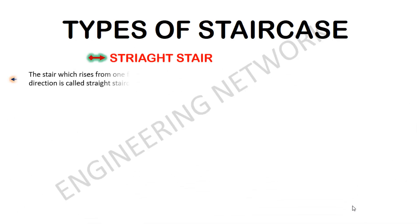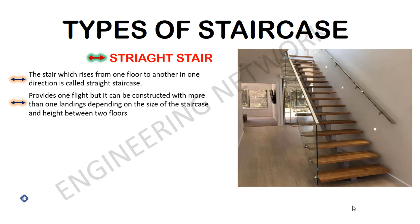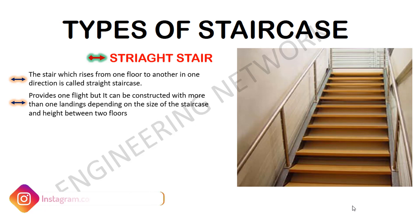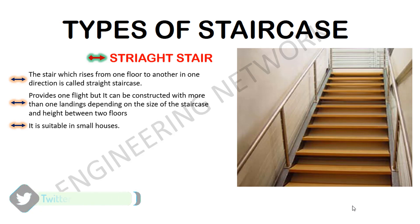Let's start with the straight staircase. The stair which rises from one floor to another in one direction is called a straight staircase. It is also called a single flight staircase because it only provides one flight, but it can be constructed with more than one landing depending on the size of the staircase and height between two floors. Generally for small houses where available width is very limited, straight stairs are used.